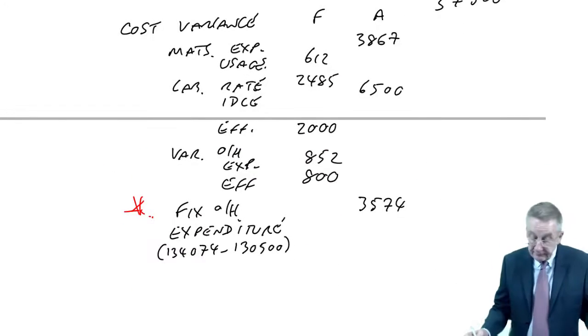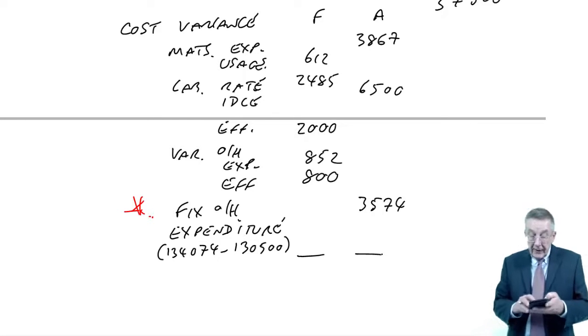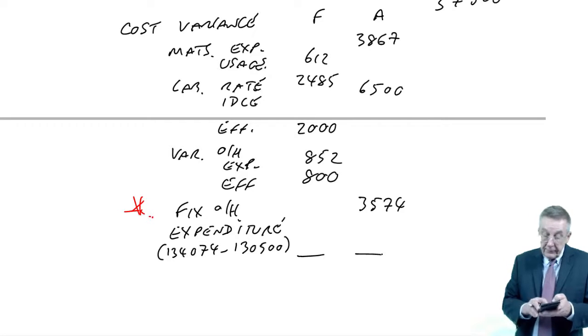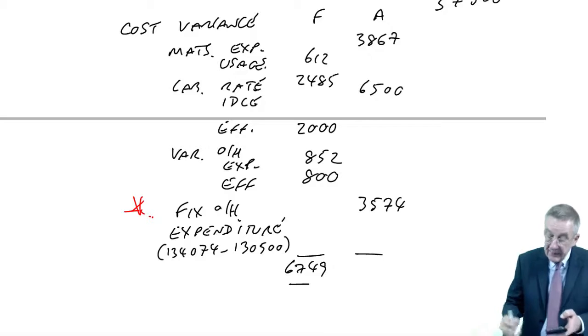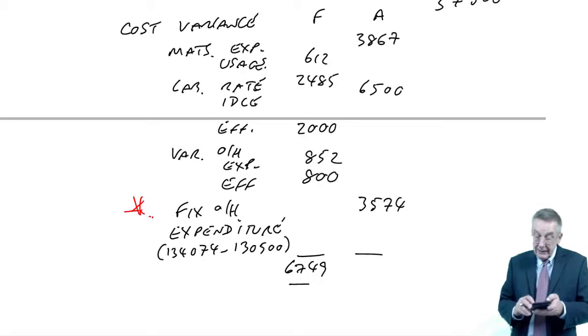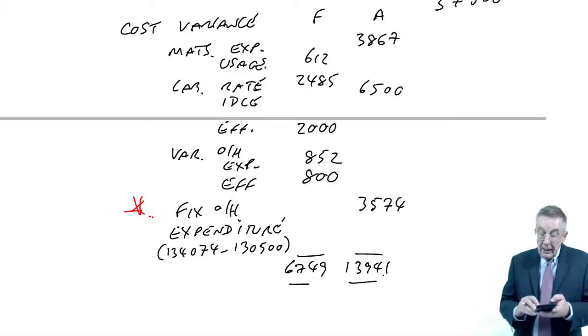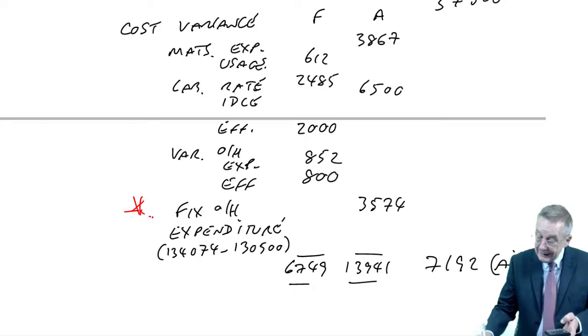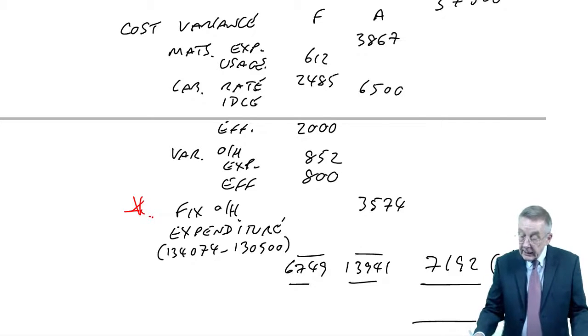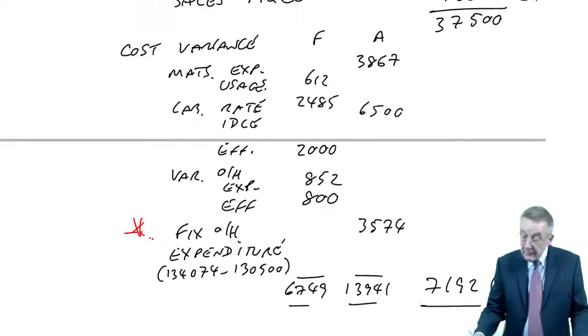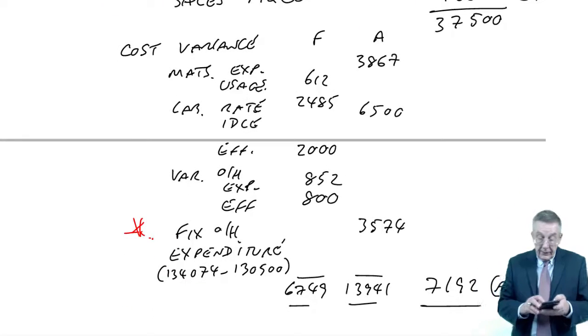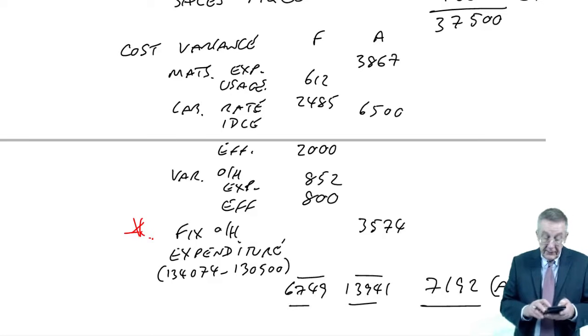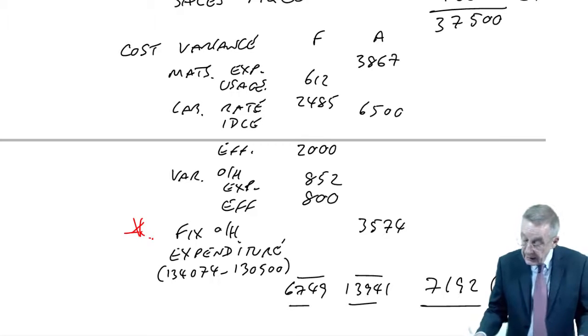Let's add them up and then we've finished it. The favourable cost variances is 612, 2485, 6749. The adverse variances 3941. The net figure, 7192. Giving an actual profit, 37,500 minus 7192, 30,308.